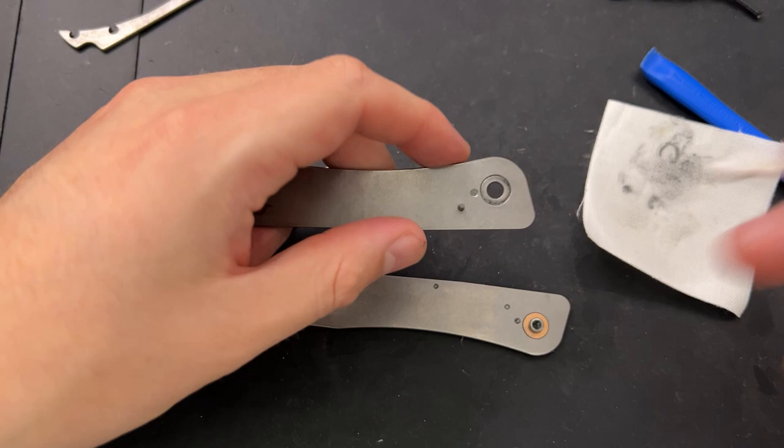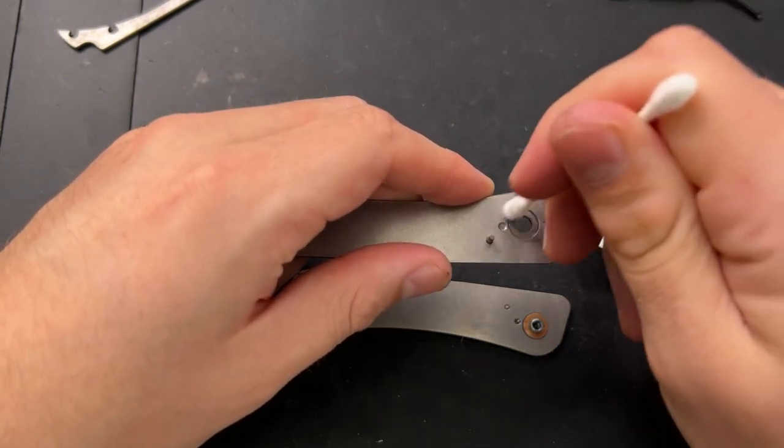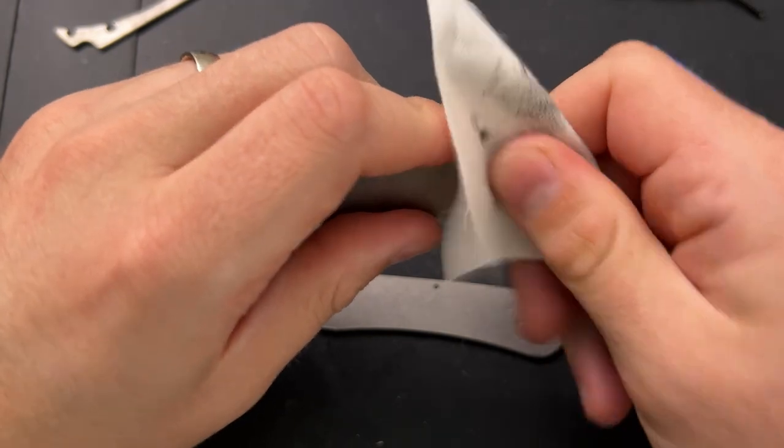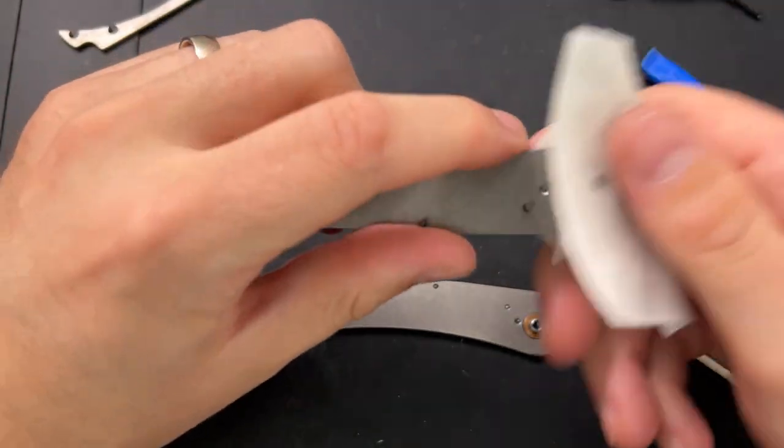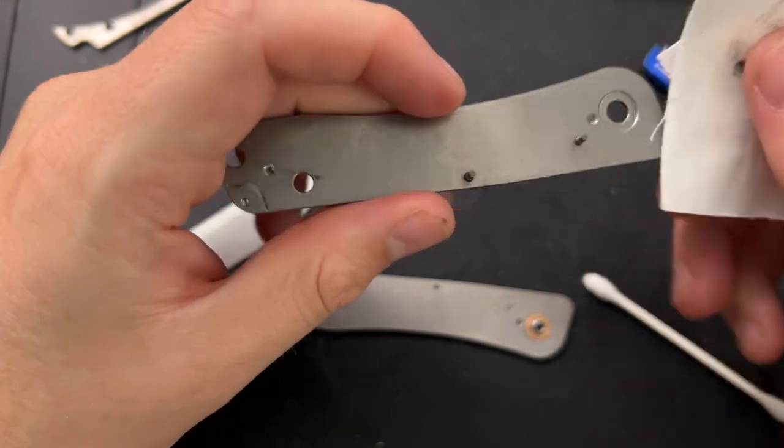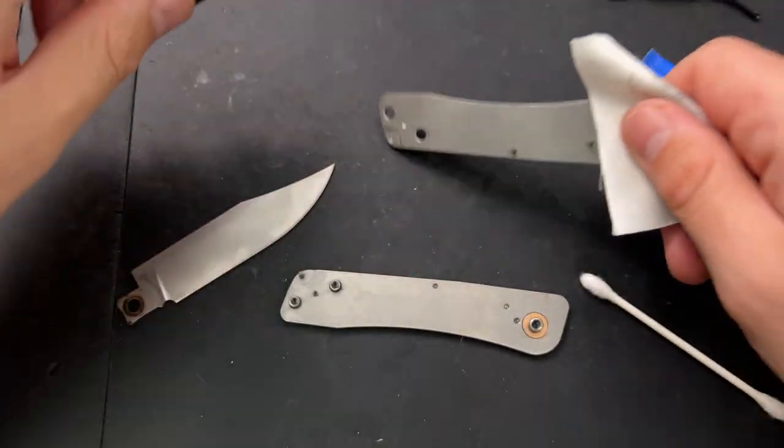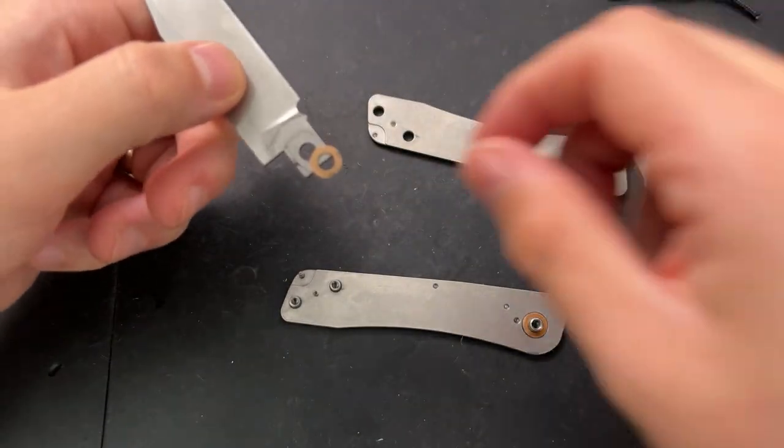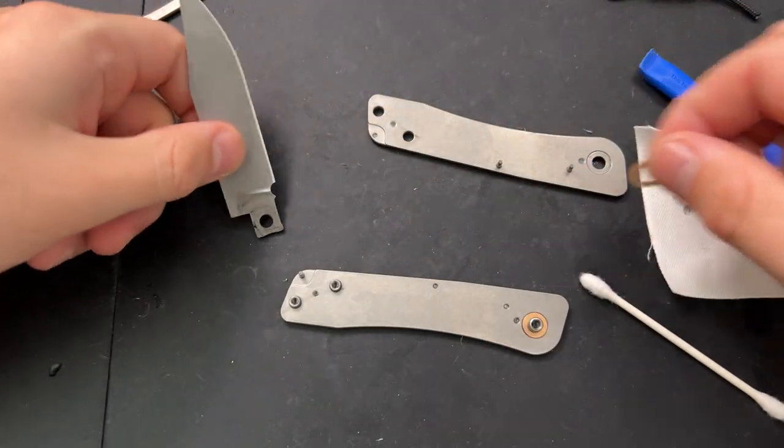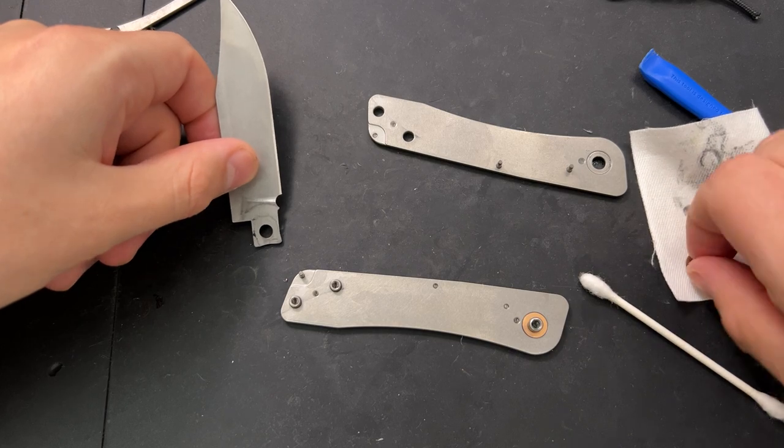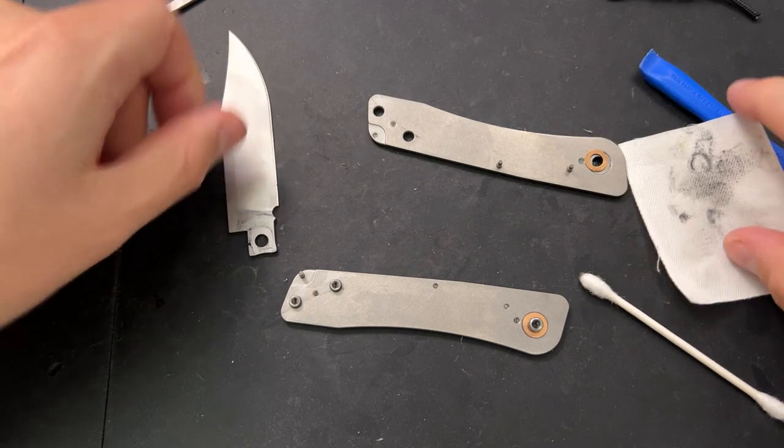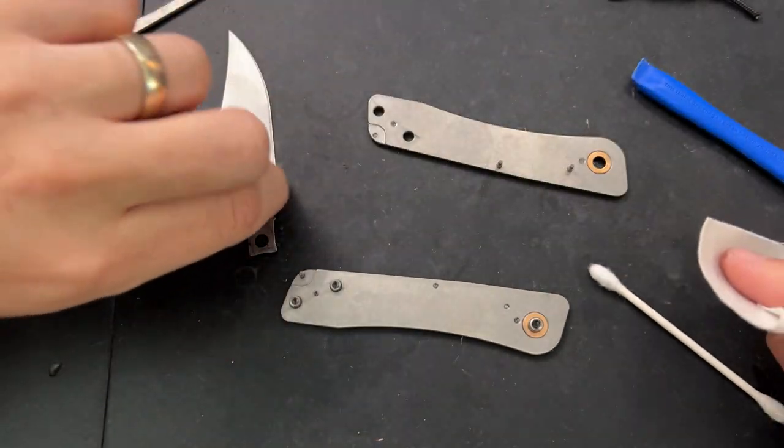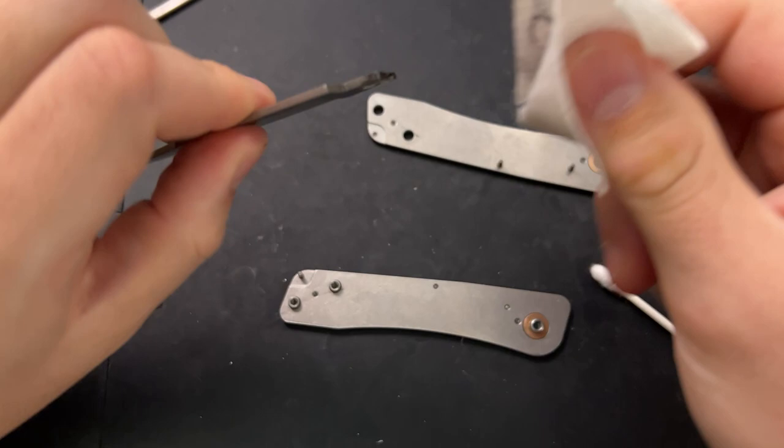I'm going ahead and grab a Q-tip and just get in the bottom here. Yeah, so the whole thing's running on phosphobronze washers, which is great and super smooth. I'm going to be real with you. I like this knife a lot. I'm not usually a big slip joint guy, but this is doing a lot of really good things right as far as slip joints go. Going ahead. Well, frankly, as far as modern knives go, it's doing a lot of things right too, but nonetheless, I have been very impressed here.